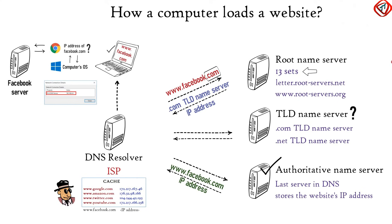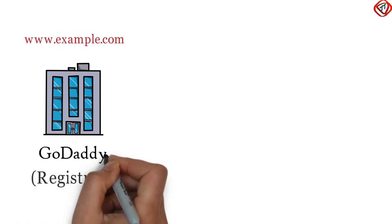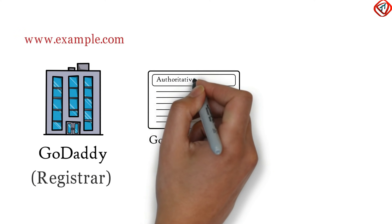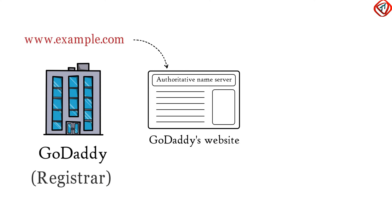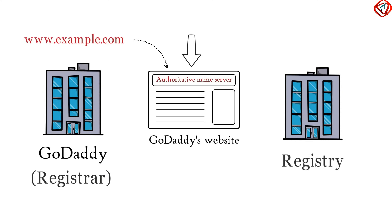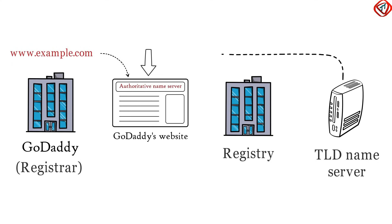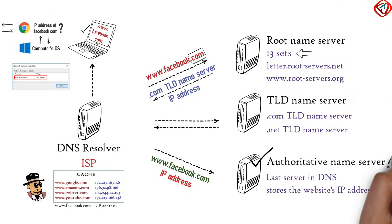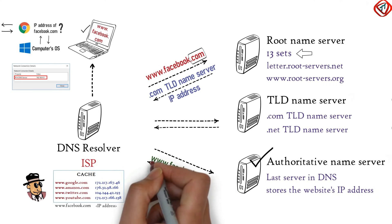But how does the TLD name server know which authoritative name server stores the IP address of the requested website? It all begins when we purchase a domain name from a registrar, for example GoDaddy. In the registrar's website, we can set the authoritative name server that the domain should use. We get the details of the authoritative name server when we buy a web hosting plan from companies like HostGator. Once authoritative name server details are entered in the registrar's website, the registrar tells the TLD name server managing authority registry to update the TLD name server with the details of the authoritative name server the user has provided. So now the TLD name server knows which authoritative name server will provide the exact IP address of the requested website.